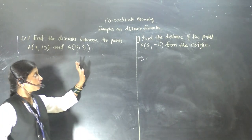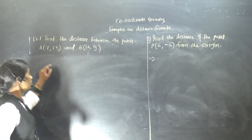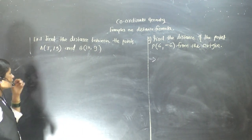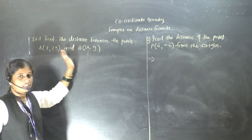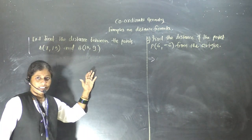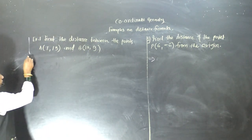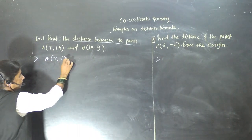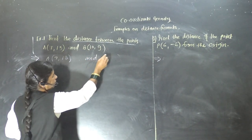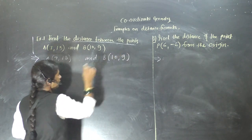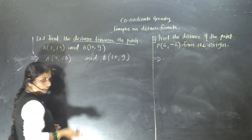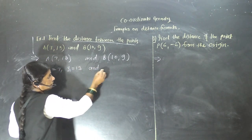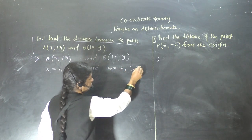Hello students. Now in this lecture, we will see examples on the distance formula. Find the distance between point A(7, 13) and B(10, 9). These two points are in the Cartesian plane. So we take x1 = 7, y1 = 13, x2 = 10, and y2 = 9.